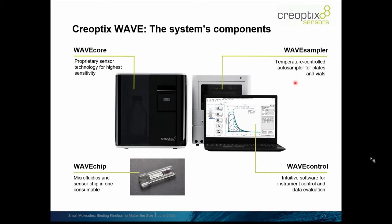Then there's of course a WAVE sampler, that's the auto sampler. It houses two plates, so it has two positions that you can equip either with 96-well or 384-well plates, or also racks for putting in vials for bigger volumes.